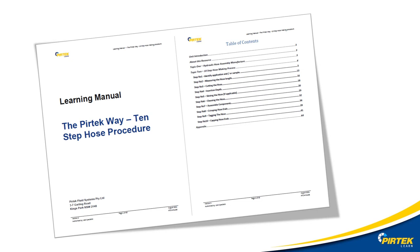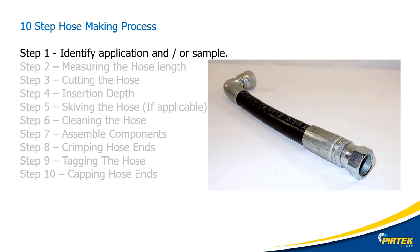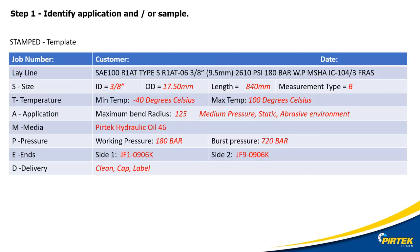You might want to download and review the Pertec 10-step hose manufacturing procedure learning manual. Step one: identify the application or replicate the sample. Step one was basically completed when we undertook the stamped analysis process of the hose. Here's our populated stamp template. We'll be adding a few extra fields because there's some other information that's critical for hose manufacturing.